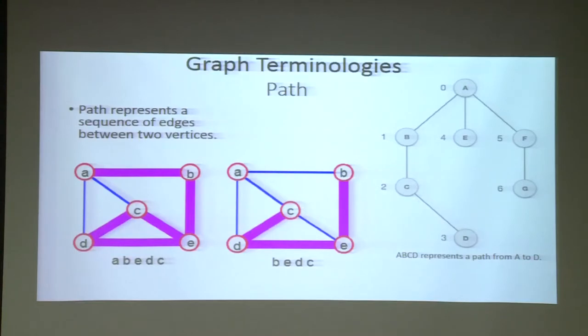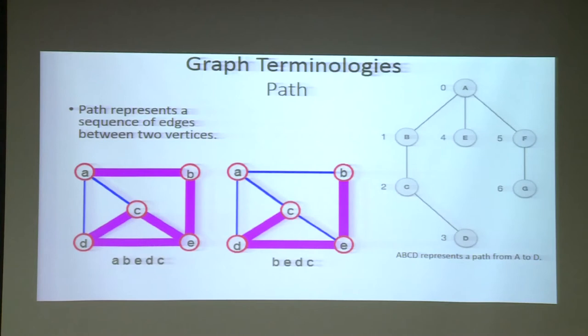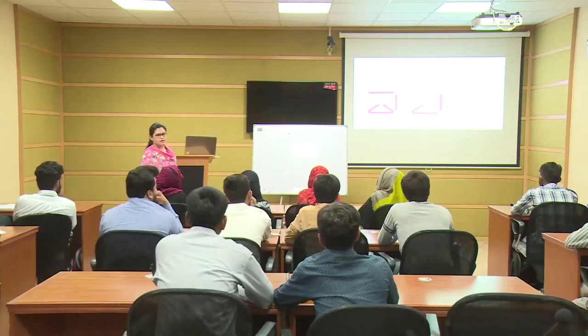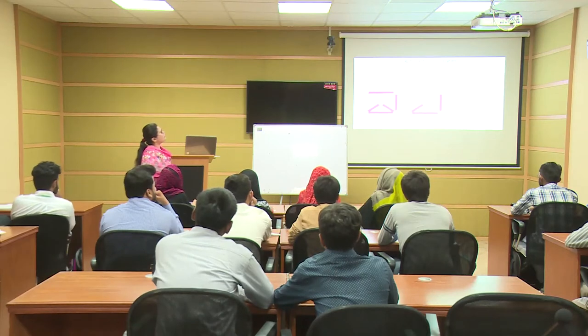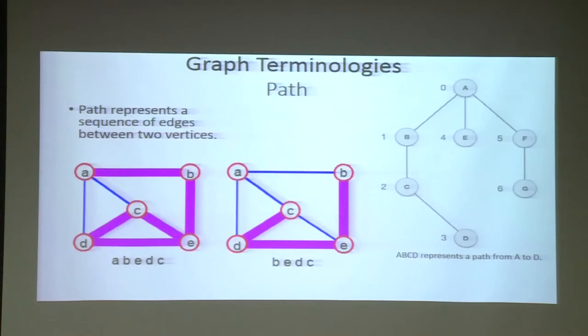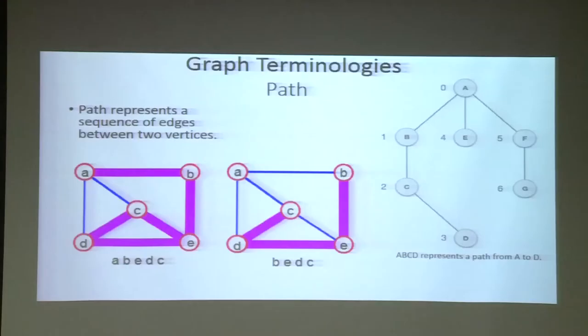The next important terminology is path. A path is created by a number of edges connecting vertices. For example, A-B-C-D is one path, A-E is another path, A-F-G is another path. B-E-D-C represents a path, and A-B-E-D-C is another path.